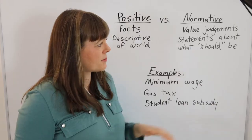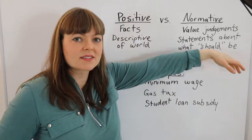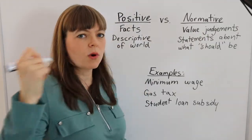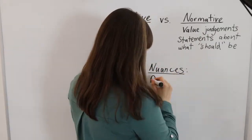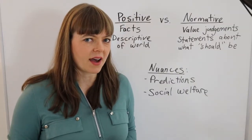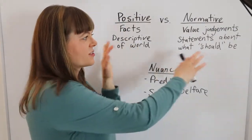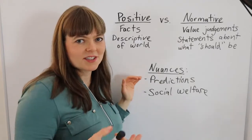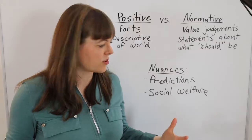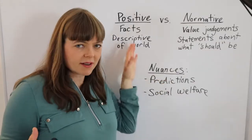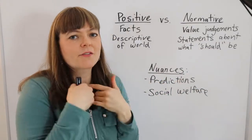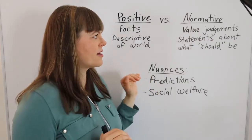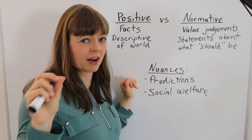Economists try to avoid normative statements. One potential problem is: what about predictions? Are predictions positive or normative? Economists are going to argue that they're positive, and I think they are, but I do think this is something we need to think carefully about.